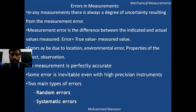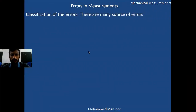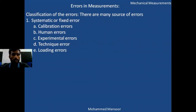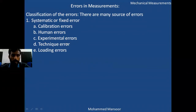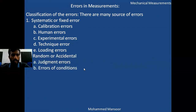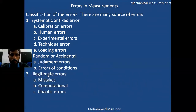There are two main types of errors: random errors and systematic errors. Systematic or fixed errors include calibration errors, human errors, experimental errors, technique errors, and loading errors. Random or accidental errors include judgment errors, errors of conditions, illegitimate errors, mistakes, and computational errors.